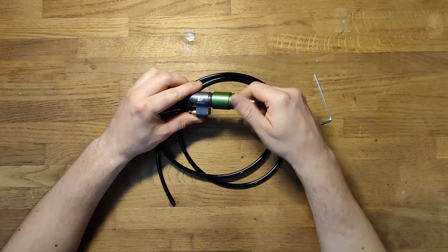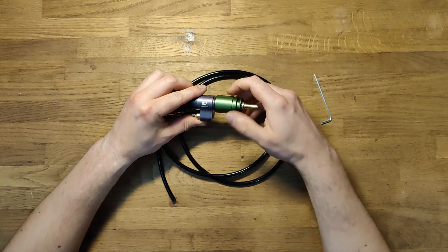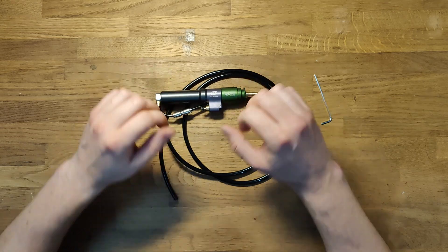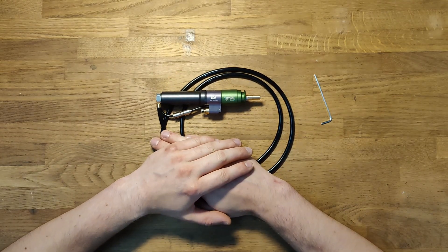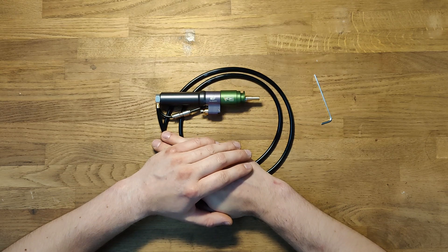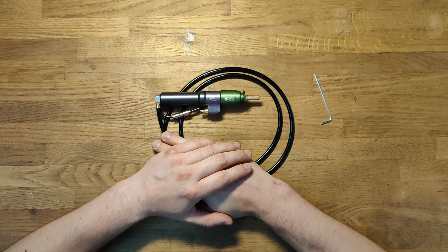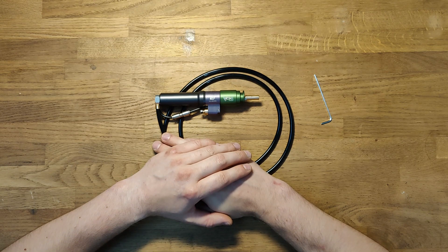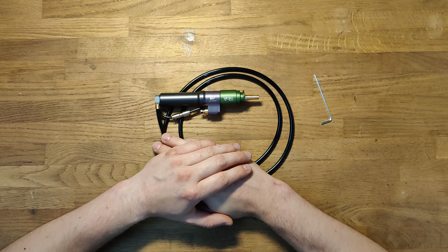Then put the front back in and put everything together into the shell to make some tests. I would not advise using Loctite until you are absolutely sure the length of your nozzle is set correctly. Otherwise it might be quite hard to adjust it later.